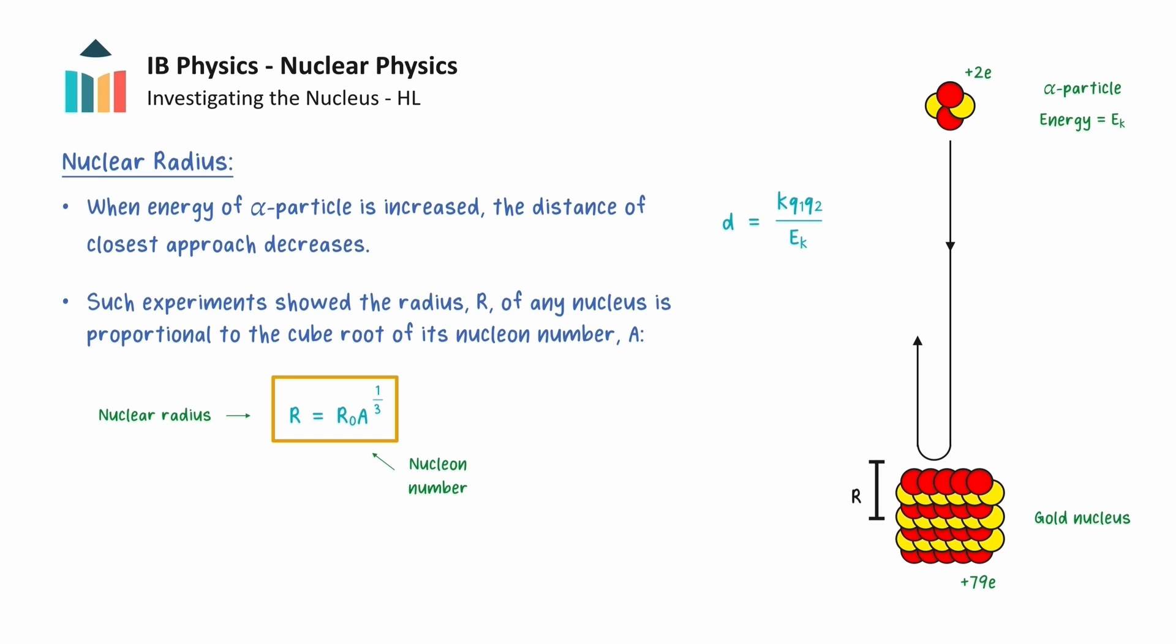Here, the nucleon number A is the same nucleon number that appears in the standard notation for specifying a nuclide. And R0 is a constant called the Fermi radius and has a value of 1.2 times 10 to the power negative 15 meters.